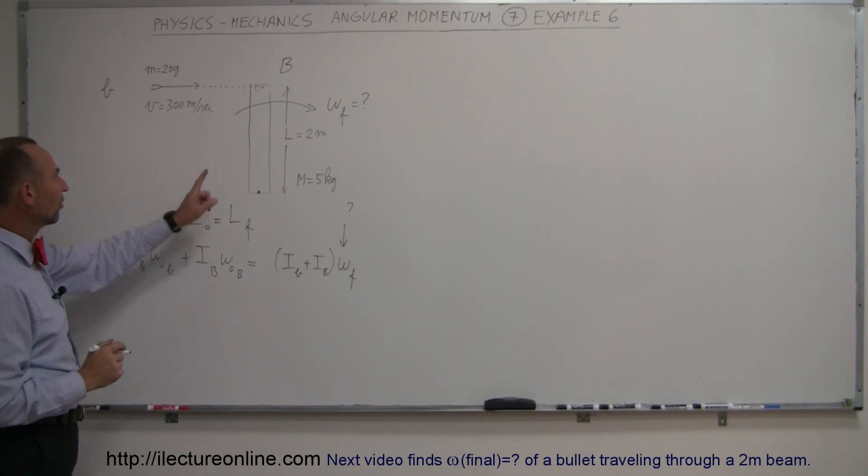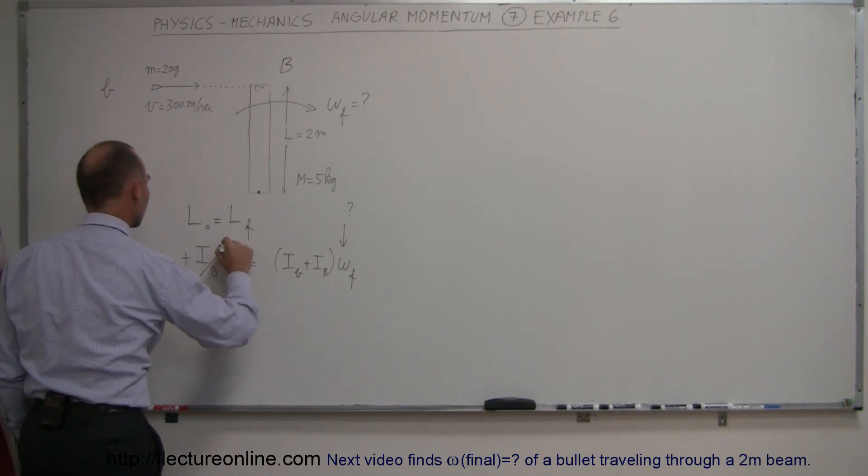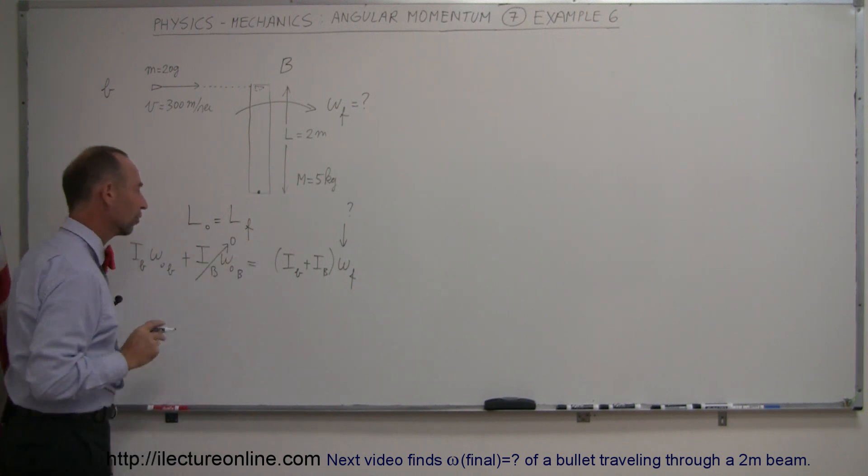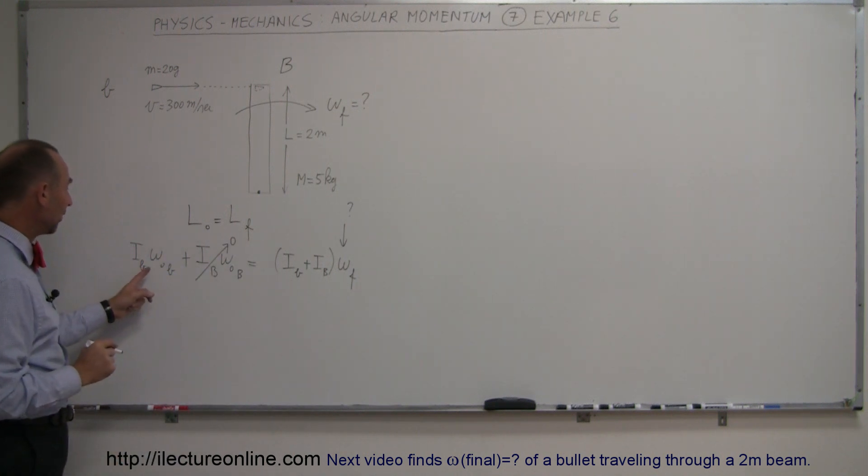First of all, since the beam was not moving it will not have an initial angular momentum so that goes to zero. Now what we have to do here is find the moment of inertia of the bullet and the initial angular velocity.